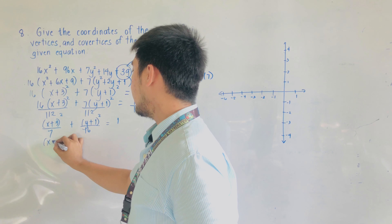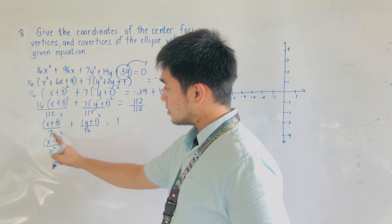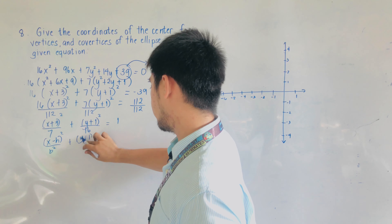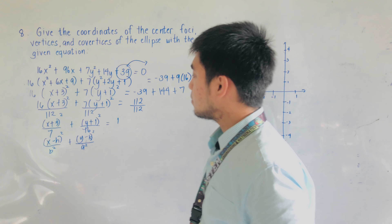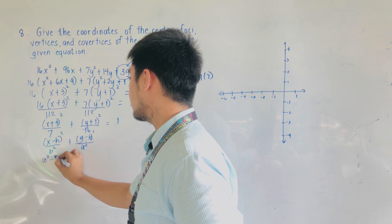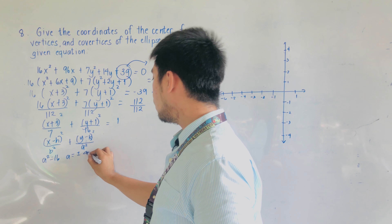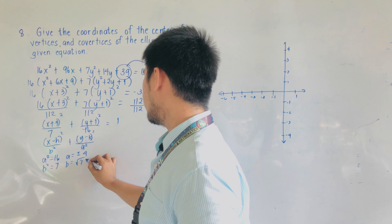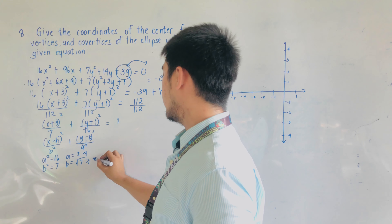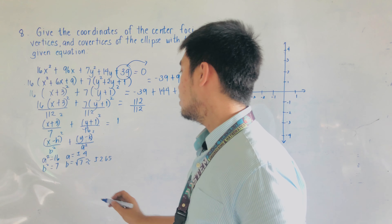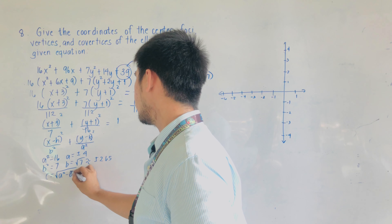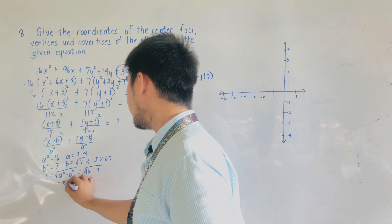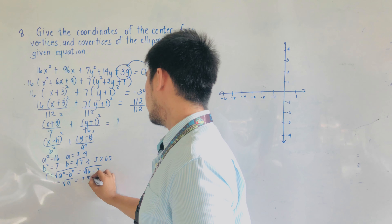This takes the form (x minus h) squared over b squared plus (y minus k) squared over a squared, since 16 is greater than 7 and 16 comes with y, making this a major vertical axis. From the equation, a squared equals 16, so a equals plus or minus 4. b squared equals 7, so b equals plus or minus square root of 7, approximately plus or minus 2.65. c equals the square root of a squared minus b squared, which is square root of 16 minus 7, equals square root of 9, which is plus or minus 3.